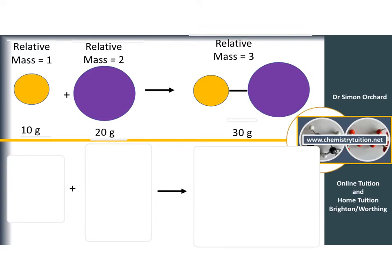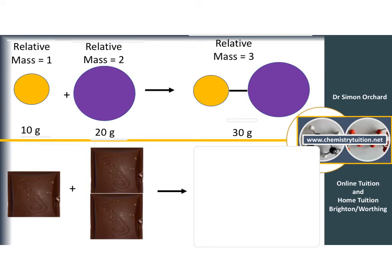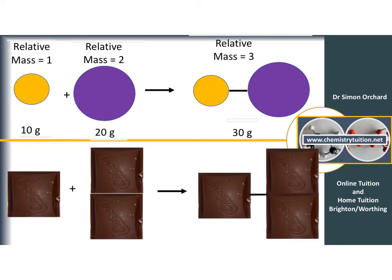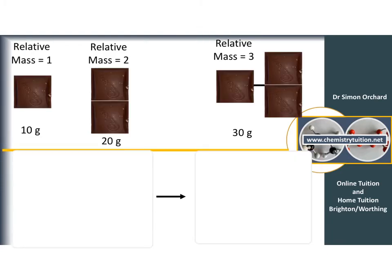We started with the orange atom at a relative mass of 1 and compare all other atoms against it. Because the purple atom is double the size, to have the same number of atoms I need half the mass of orange atoms. Thinking of this in terms of chocolate: the relative mass of 2 means two chunks, which combine to give a chocolatey molecule. You only need half the mass of the orange atoms compared to the purple atoms.